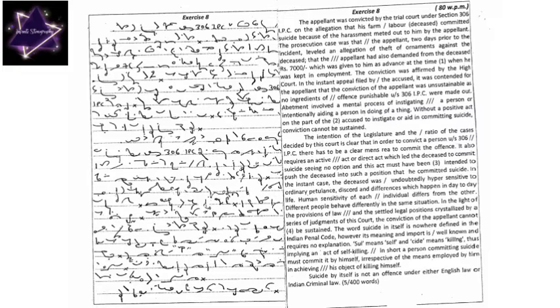Abettment involved a mental process of instigating a person or intentionally aiding a person in doing of a thing without a positive act on the part of the accused.